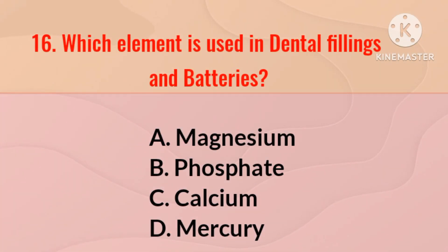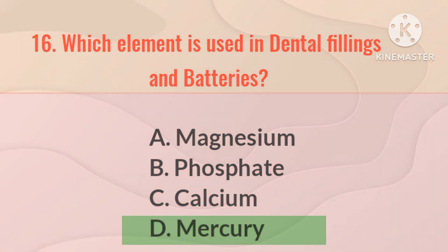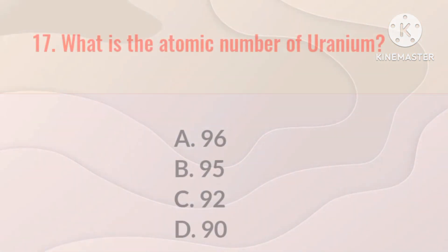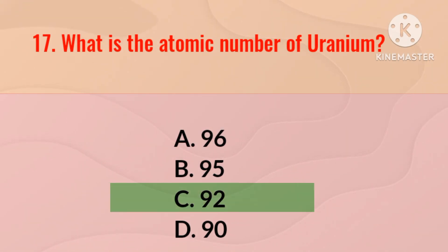Which element is the main component of natural gas? The right answer is methane. Which element is used in dental fillings and batteries? The right answer is mercury.